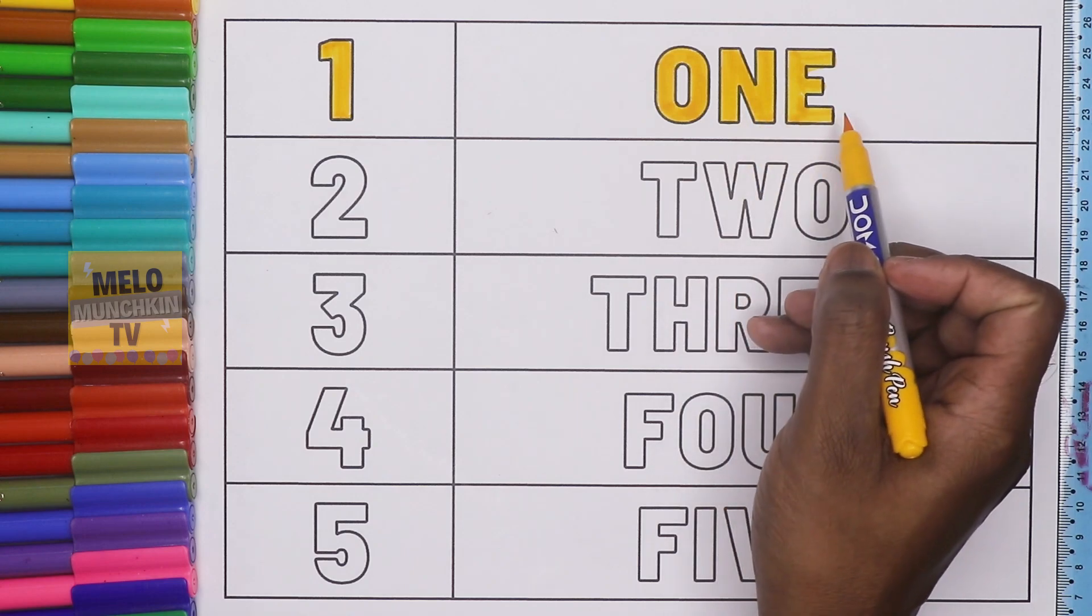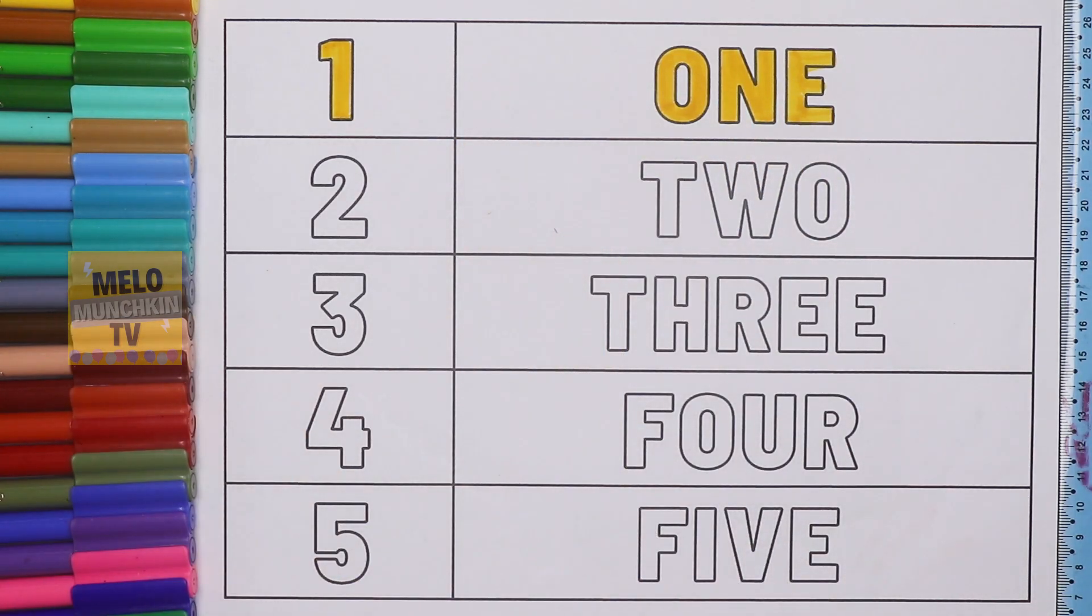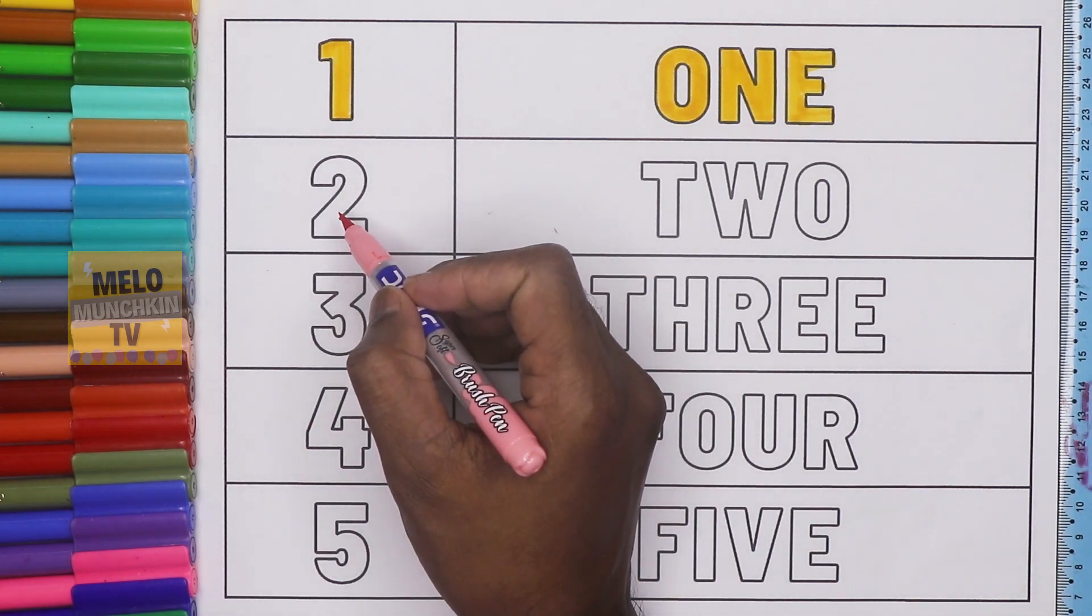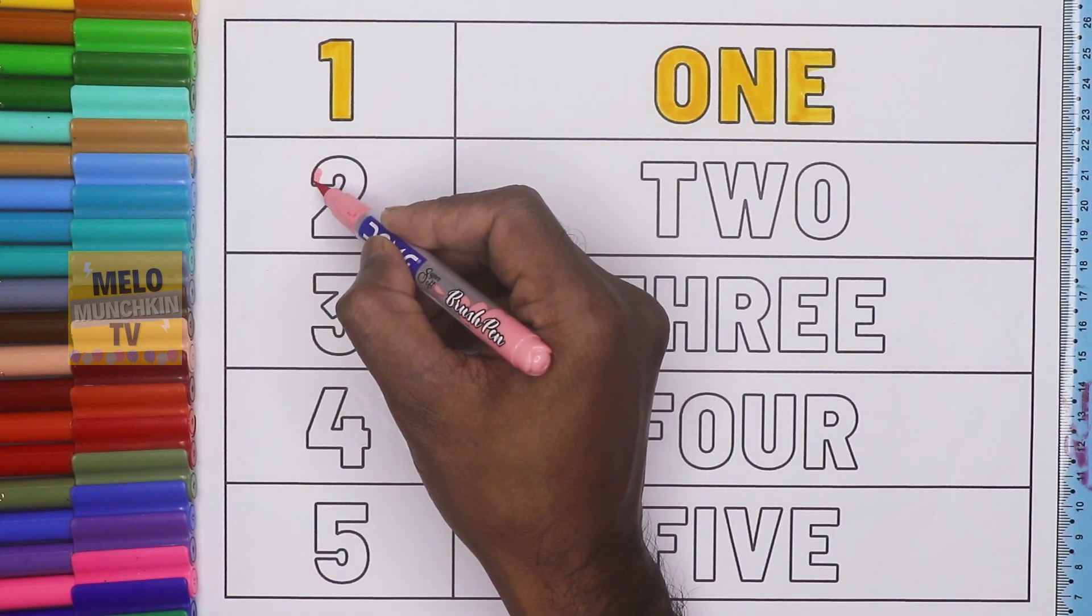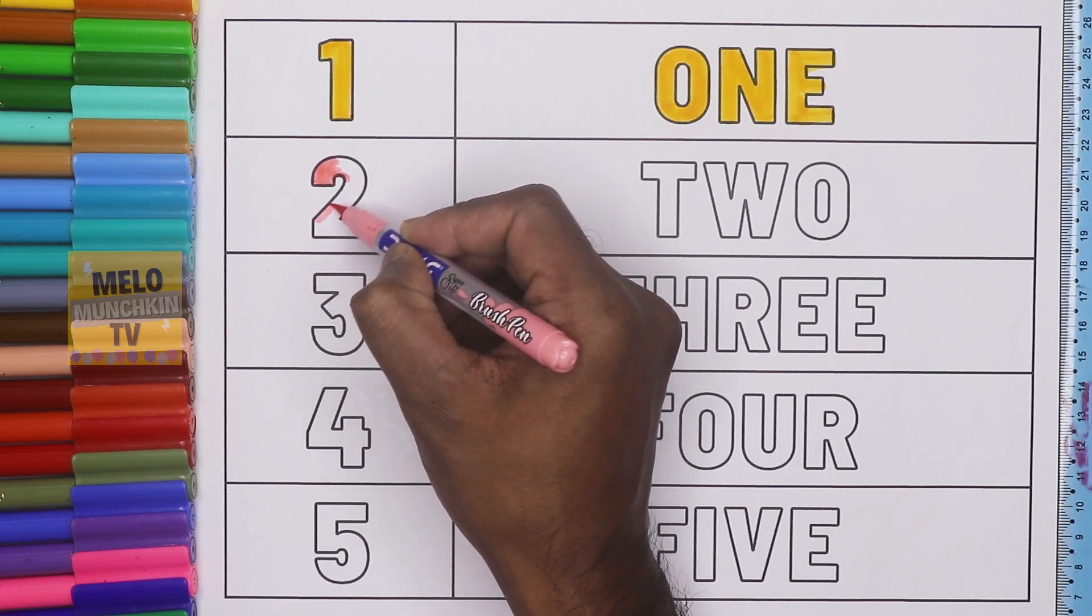This is one, O-N-E, 1, and this one is yellow color. Next I'll take light pink color to color number 2. This is number 2 and what is the spelling? T-W-O, 2.